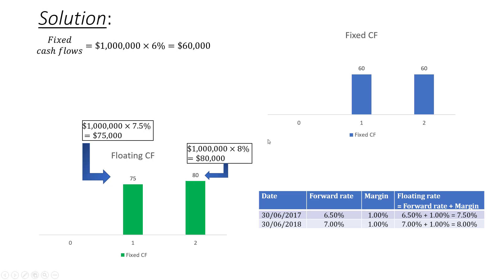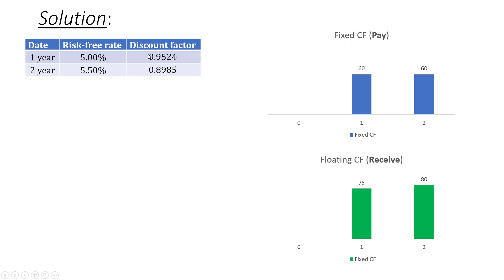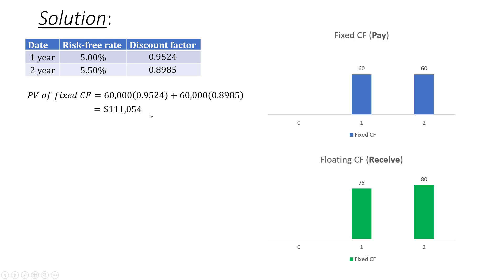We can't simply net off the cash flows directly — we need to calculate their present values to account for the time value of money. For the fixed cash flow, the PV is $60,000 × 0.9524 plus $60,000 × 0.8985, which equals $111,054. For the floating cash flow PV, we take $75,000 × 0.9524 plus $80,000 × 0.8985, giving $143,310.